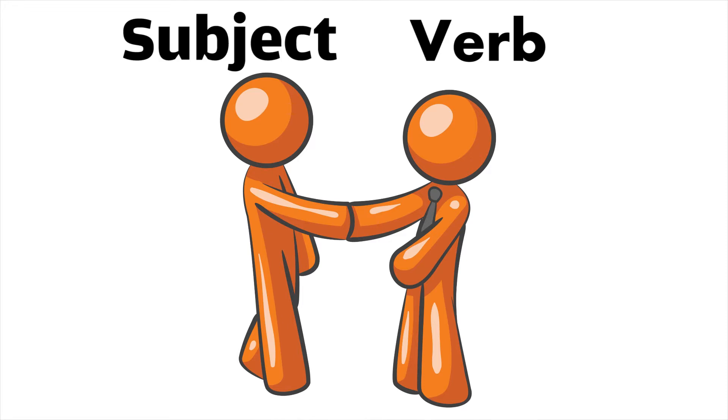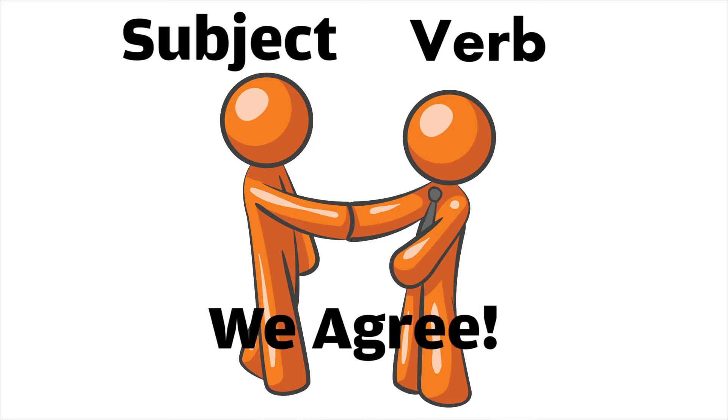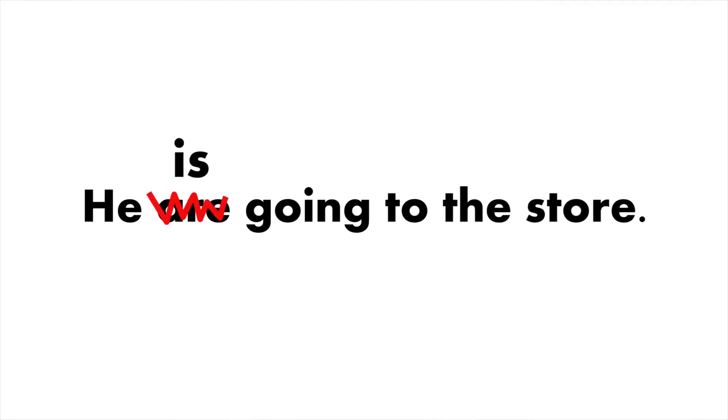One more thing: in any given sentence, the verb must agree with the subject. So what does that mean? For example, a singular noun like the word 'he' must be accompanied by the singular verb 'is.' Would you say 'he are going to the store'? Of course not. You should say 'he is going to the store.'